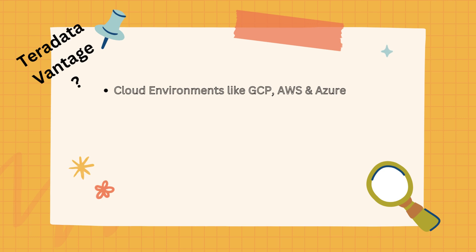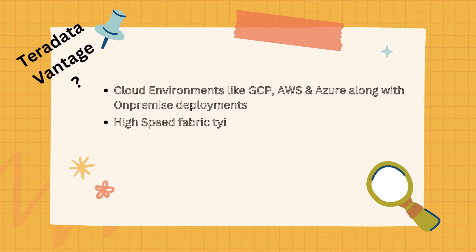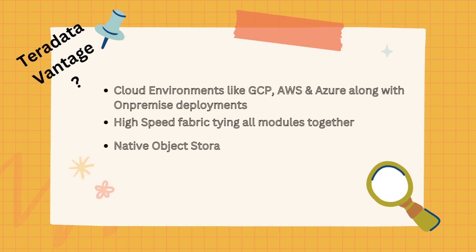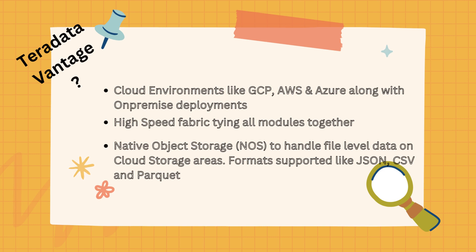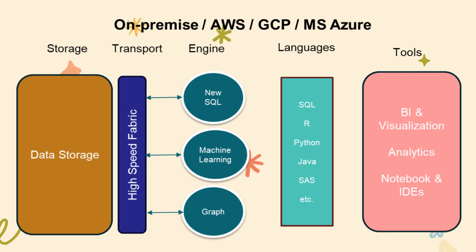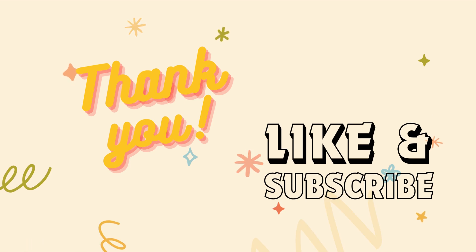Vantage also supports notebooks and integrated development environments including RStudio, Jupyter, SQL Assistant, and Teradata Studio. Vantage can be deployed on public cloud environments — AWS, GCP, and Azure — along with existing on-premise data centers. A high-speed fabric ties processing together by interconnecting all the modules. NOS, or Native Object Storage, is another feature introduced in Teradata Vantage. It helps to read and write from external objects stored on cloud, supporting formats like JSON, CSV, and Parquet, thus supporting semi-structured or file-level data alongside traditional data storage. In the next sessions, I will be covering Teradata architecture, so stay tuned and enjoy your day.